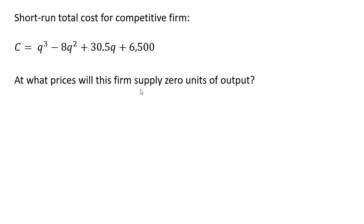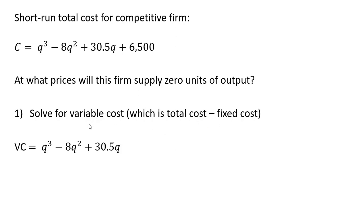At what prices will this firm supply zero units of output? So first thing we're going to do is solve for the variable cost, which is total cost minus fixed cost. So variable cost is everything in this cost equation except the fixed cost component. We subtract that out.